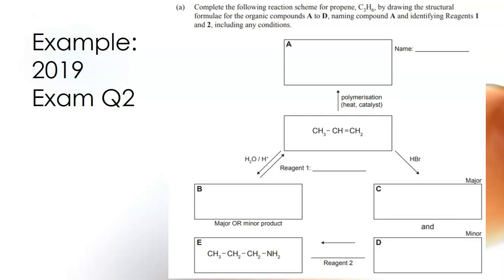There are only two possible alcohols and it looks like either of them would be acceptable so I could draw propan-1-ol or propan-2-ol in that box for B. Now reagent 1 is the reverse of that one so we're going from our alcohol to our alkene.